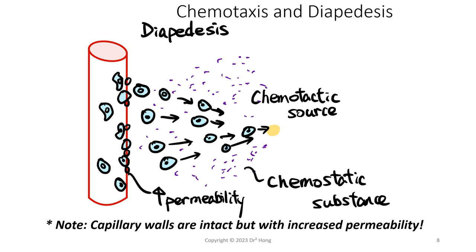Also involved in this migration is something called chemotaxis. Usually there are chemotactic signals at the site of infection that attract neutrophils to slip out from blood vessels and enter the site of infection — oftentimes a site of injury. Diapedesis is a very interesting process: when the cells migrate through the capillary, the capillary walls are actually intact but with increased permeability, so the blood vessels are not broken in the process.